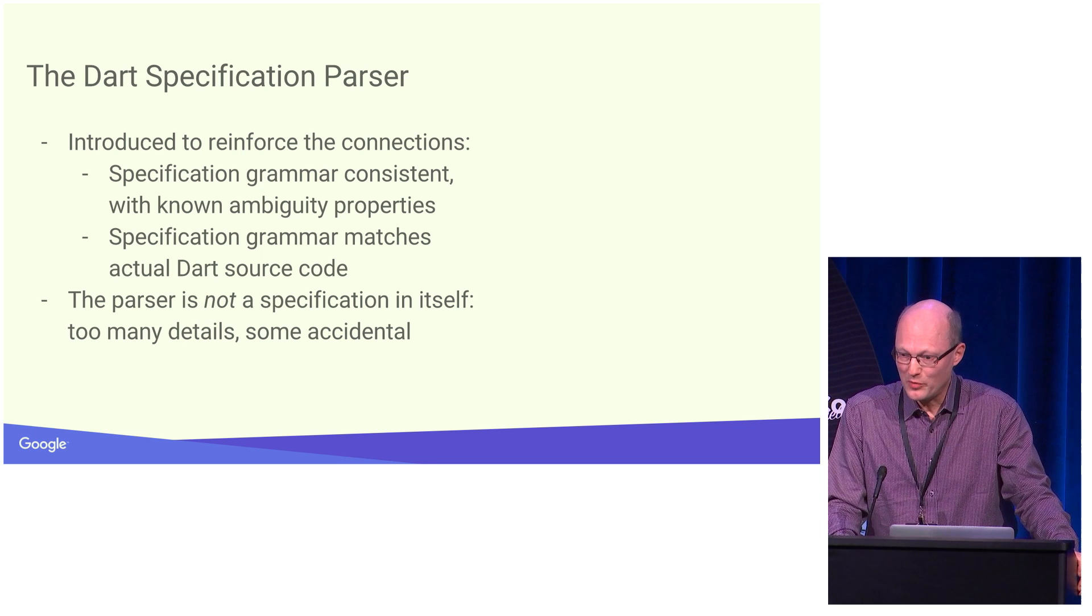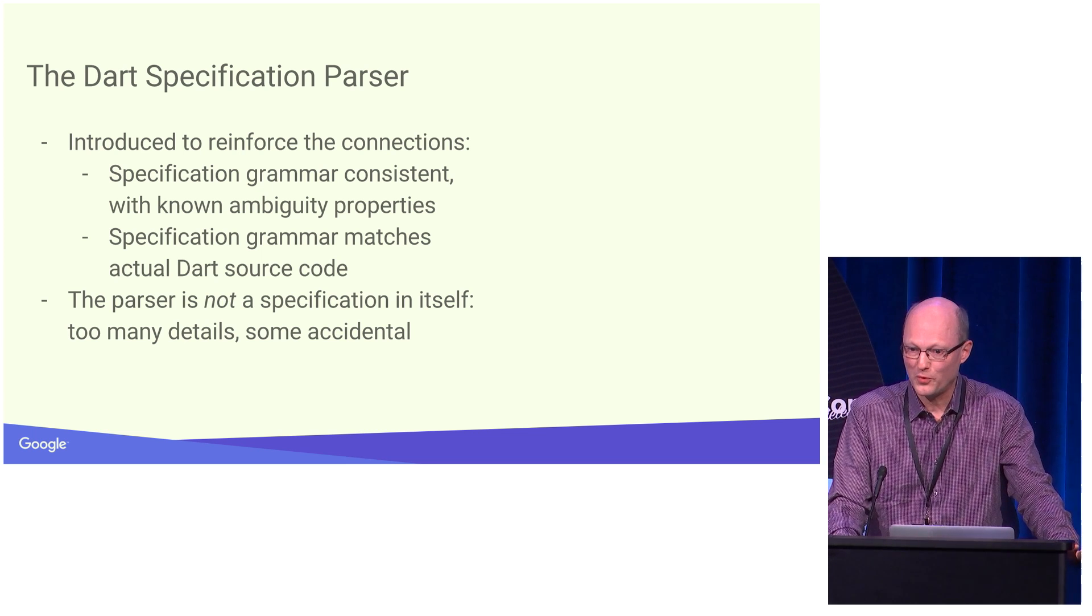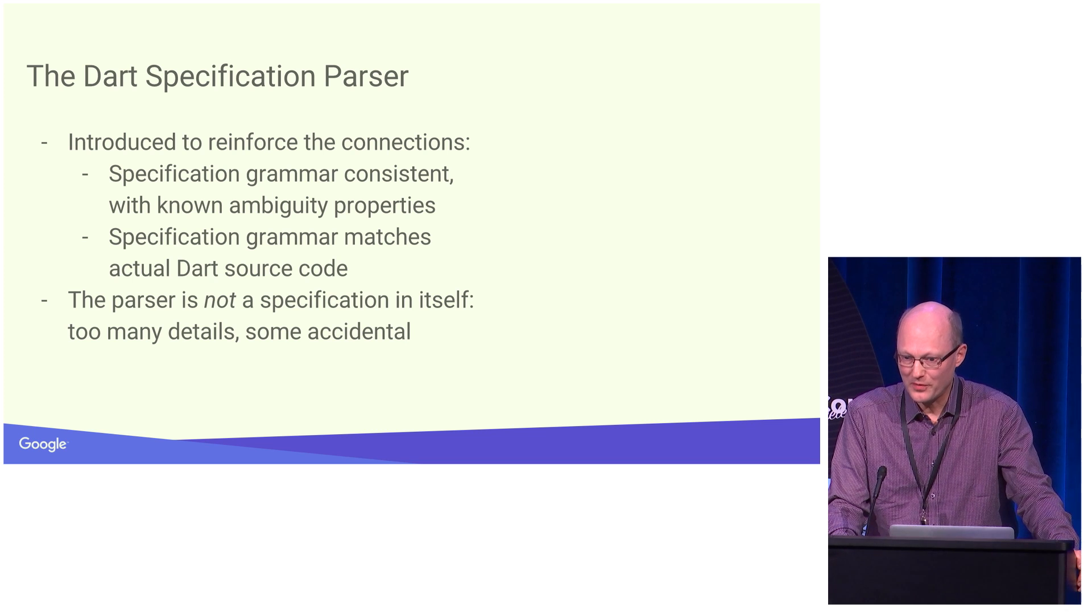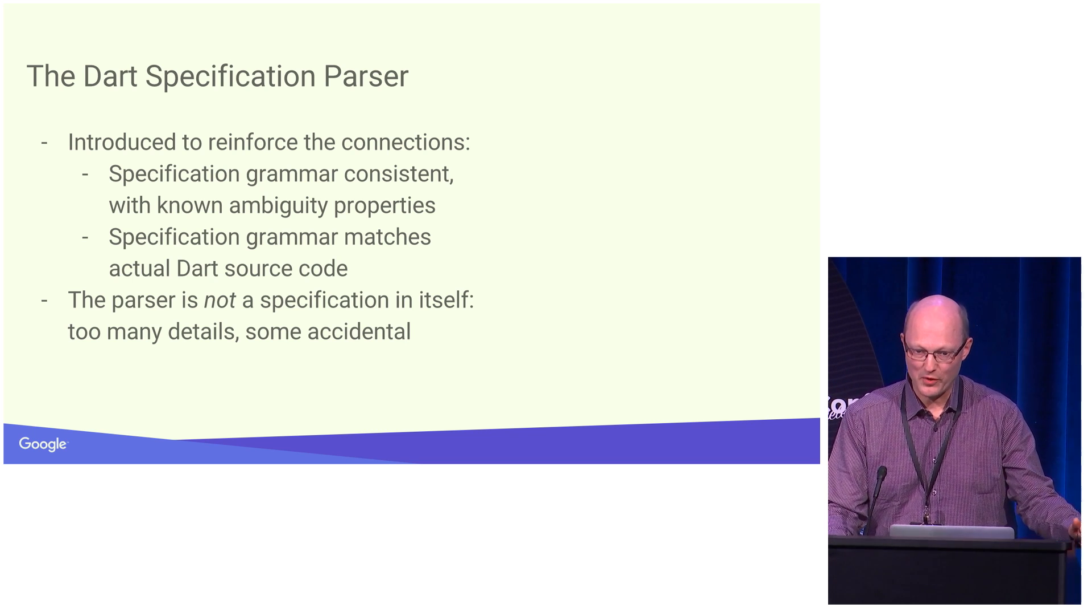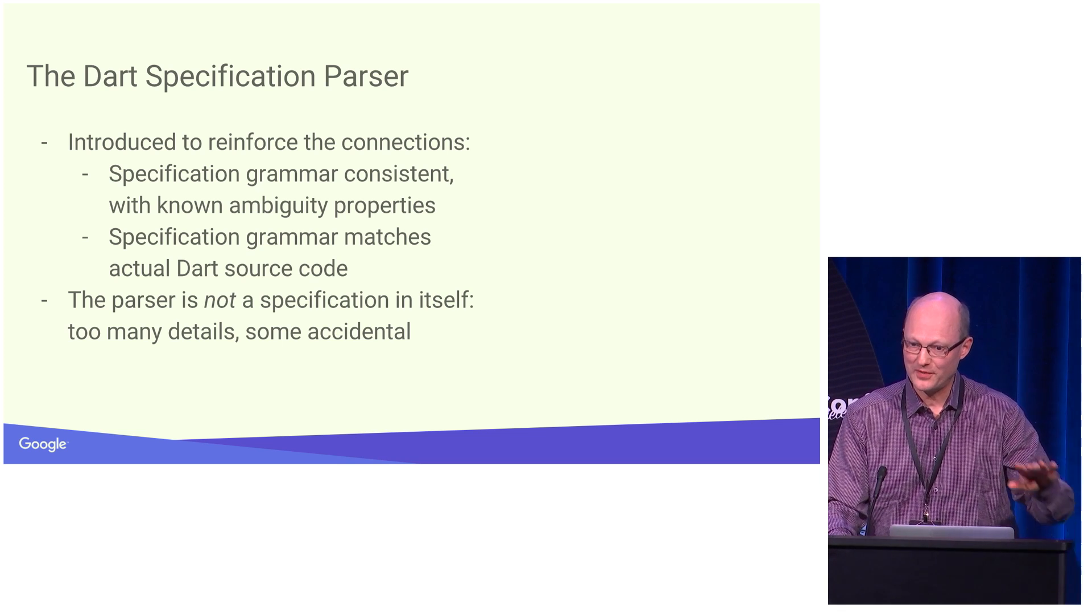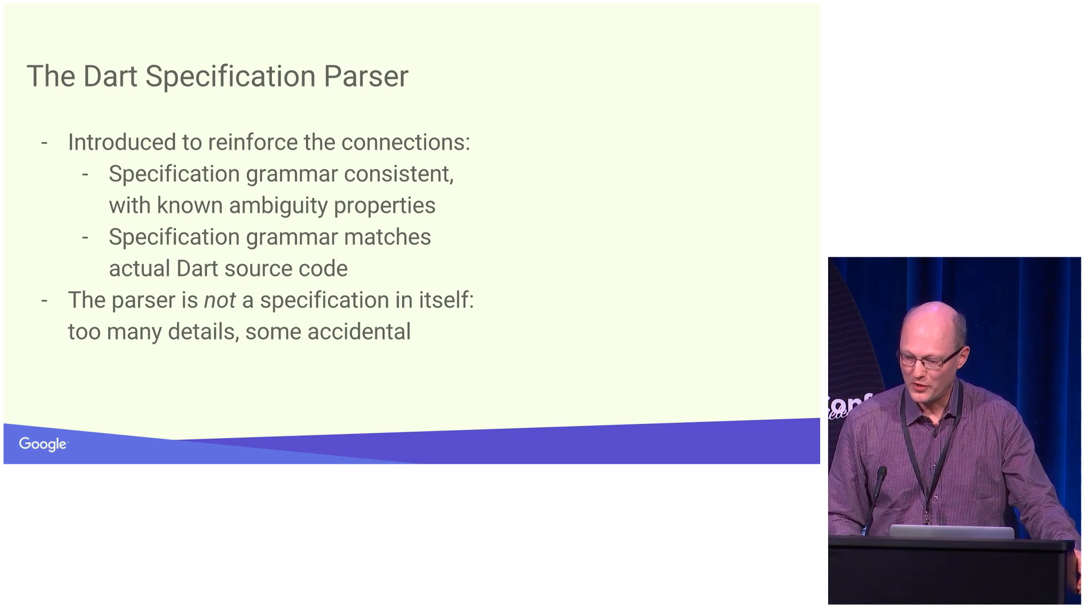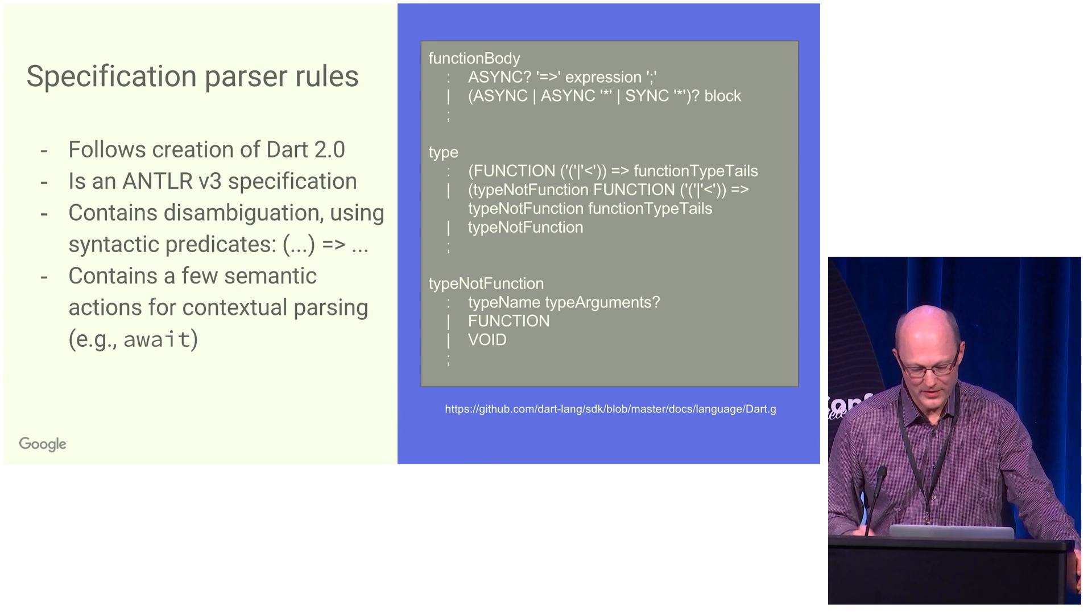This is, as I mentioned, a specification in a particular tool, this Antler tool, so that means it is not something we're going to make the specification of the grammar of the language because it has accidental properties, it's an Antlerv3 thing. But still we're going to use it as input.